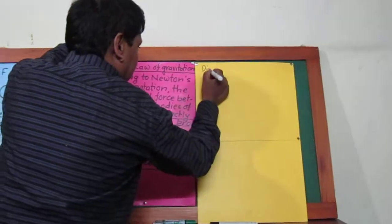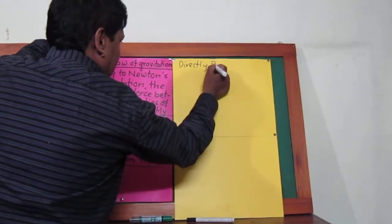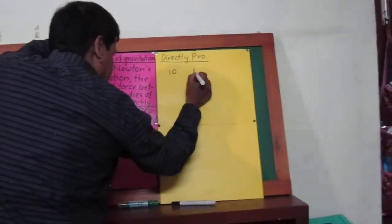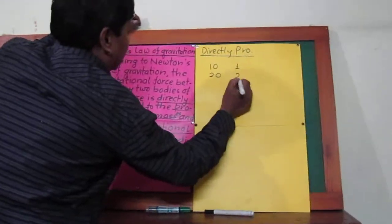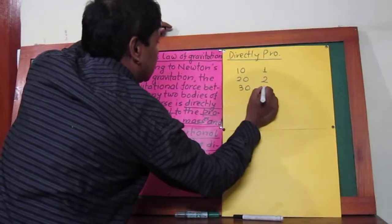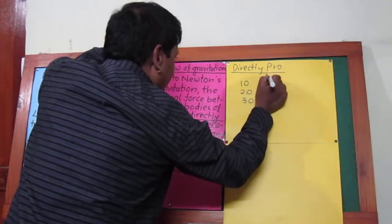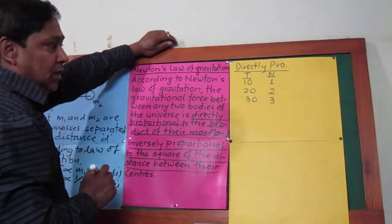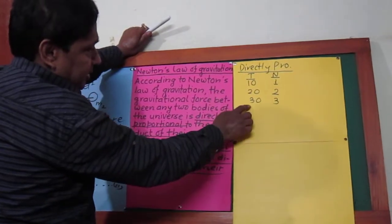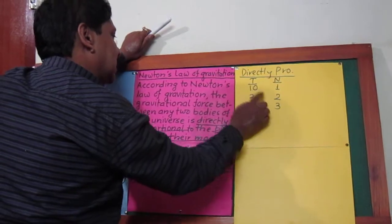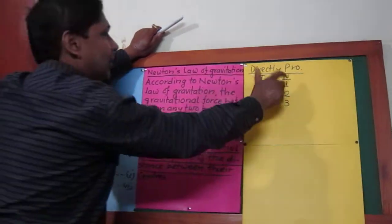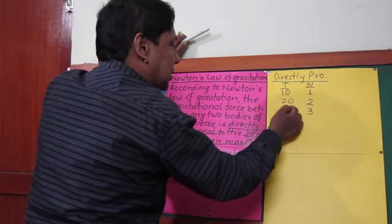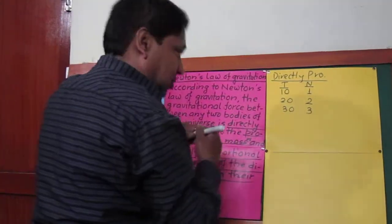What is the meaning of directly proportional? Let's say 20 rupees is the cost of one book, then certainly 40 rupees will be the cost of two books and 60 rupees will be the cost of three books. If number of books are represented by n and the cost is represented by t (total cost), then when total cost increases, number of books also increases. When one quantity increases the other also increases, and when one quantity decreases the other also decreases.